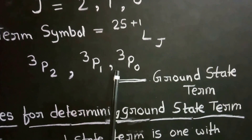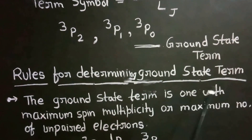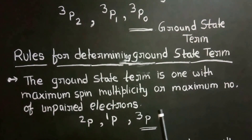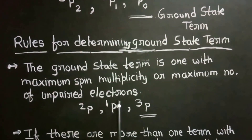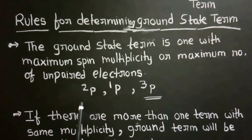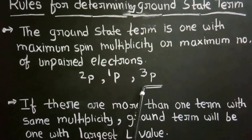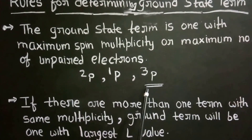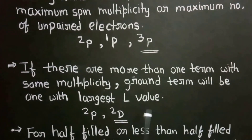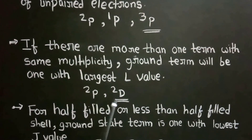The ground state term is 3P0. There are rules for determining the ground state term. The first rule is that the ground state term is the one with maximum spin multiplicity, meaning the maximum number of unpaired electrons. For example, among states 2P, 1P, and 3P, the 3P state has the maximum spin multiplicity, so it is the ground state term. The second rule is that if there are more than one terms with the same multiplicity, the ground state term is the one with the largest L value. For example, between 2P and 2D, the 2D term is the ground state.